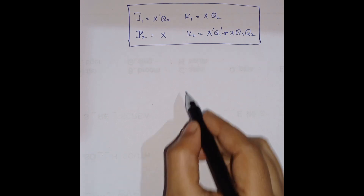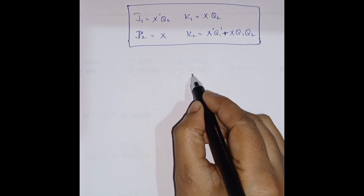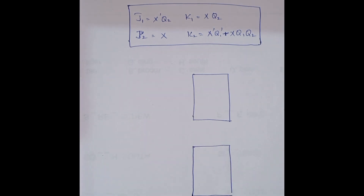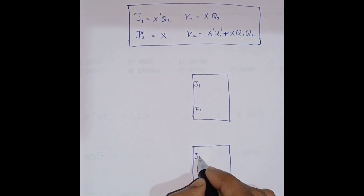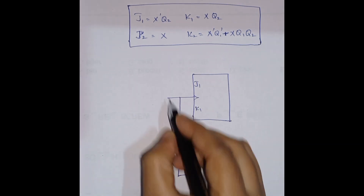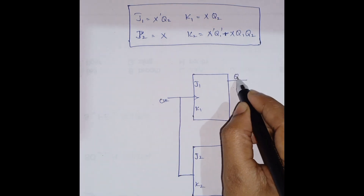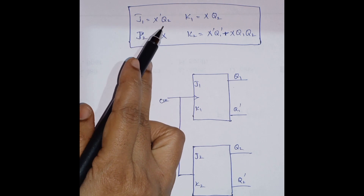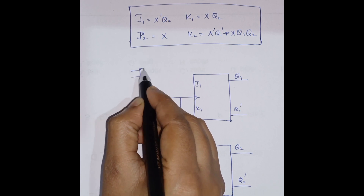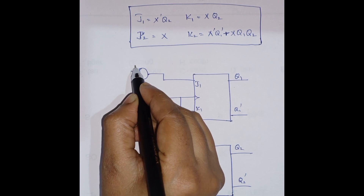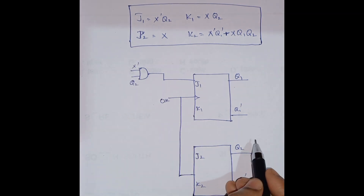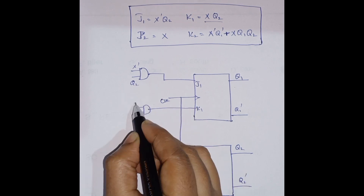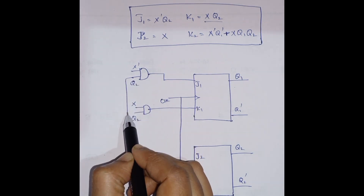Now we draw the logic diagram from these expressions. We have two JK flip-flops since we have two bits. The inputs are J1K1 and J2K2, both needing a clock pulse. The flip-flops produce outputs Q1, Q1', Q2, and Q2'. For J1 = x'Q2, we use an AND gate with inputs x' and Q2. For K1 = xQ2, we use another AND gate with inputs x and Q2.